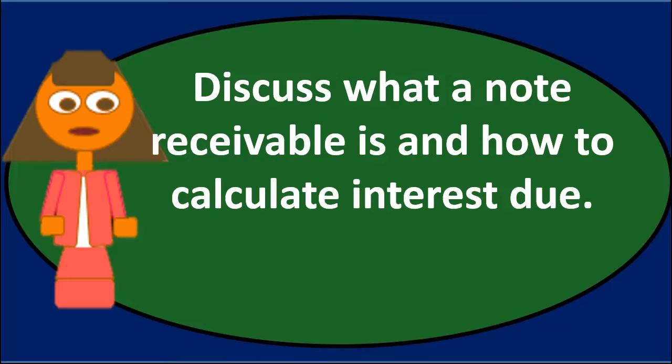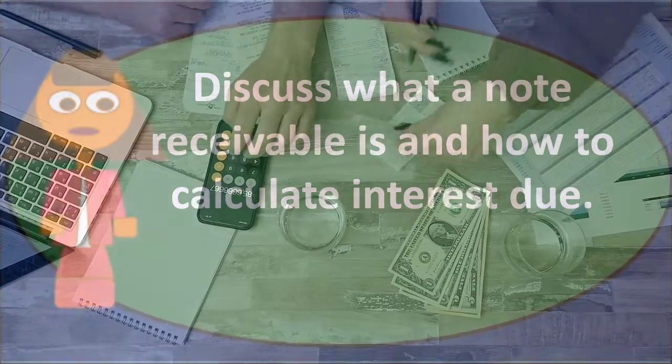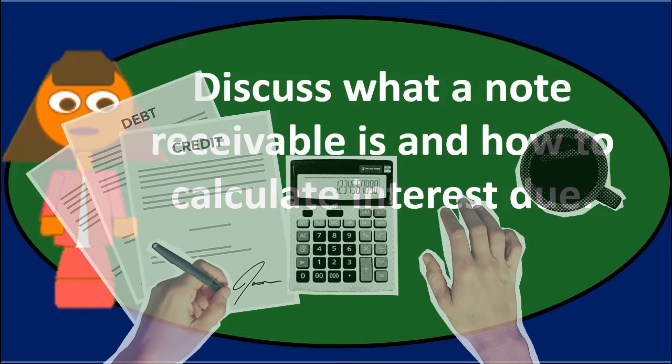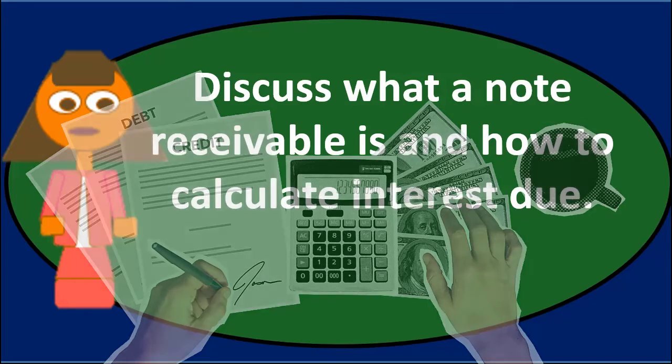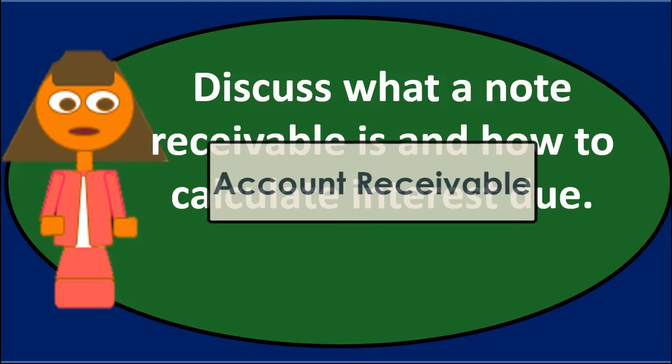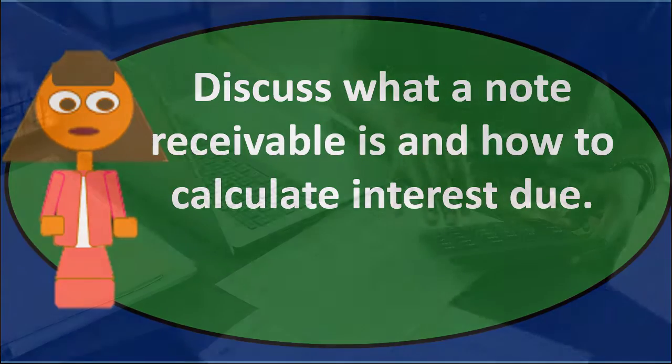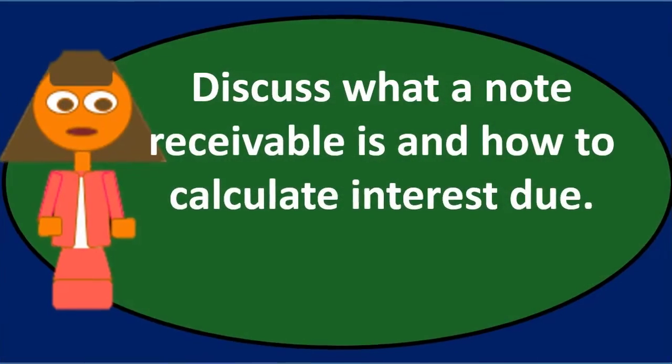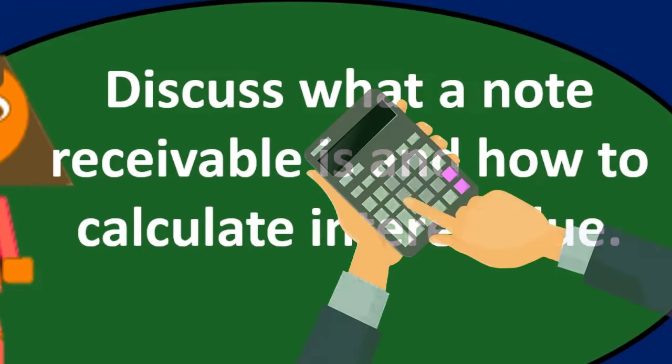Once we have a note receivable, we're going to have to calculate interest on it. When we first put the note receivable on the books, we don't need to know what the interest rate is. We can just debit notes receivable and credit sales or credit accounts receivable, depending on whether we made a sale for the note receivable or if we're converting an accounts receivable. Then calculating interest, we need to note that we're dealing with simple interest here.